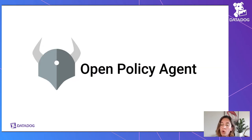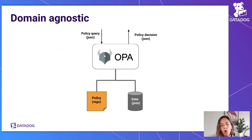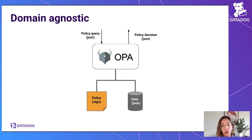This is where OPA, or Open Policy Agent, comes into play. OPA is a CNCF project, so it's completely open source. Basically it tries to decouple policy decision-making from policy enforcement. OPA gets a policy query in JSON format, and based on some policy stored in a domain-specific language called Rego and some data, it returns a policy decision also in JSON format — completely domain agnostic.